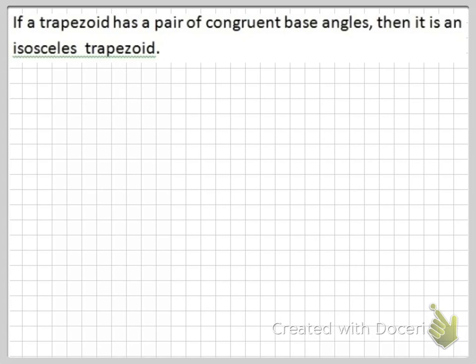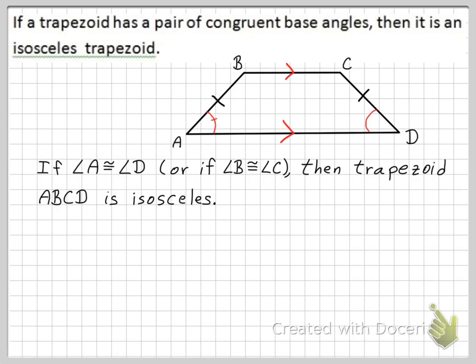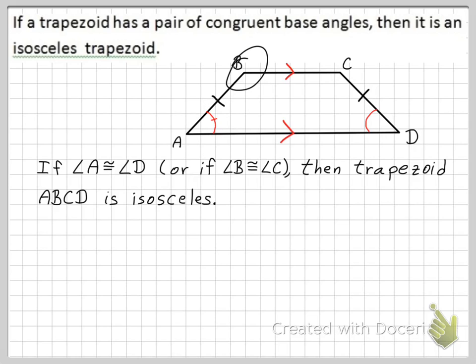The next theorem: if a trapezoid has a pair of congruent base angles, then it is an isosceles trapezoid. So if angle A is congruent to angle D, or if angle B is congruent to angle C, then the trapezoid must be an isosceles trapezoid. This is just the converse of the previous theorem.